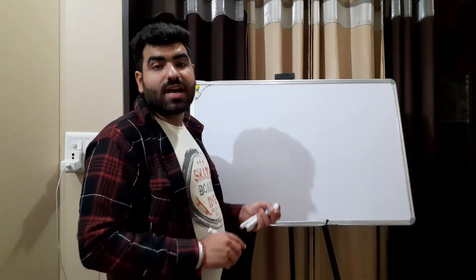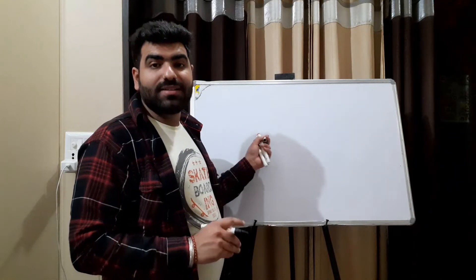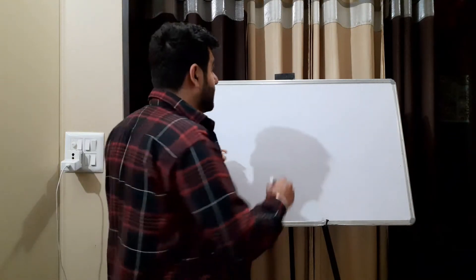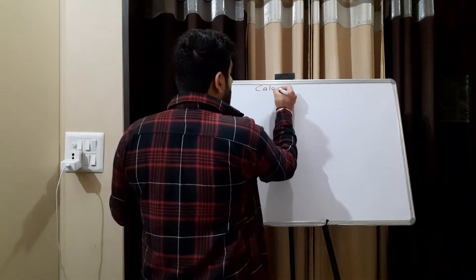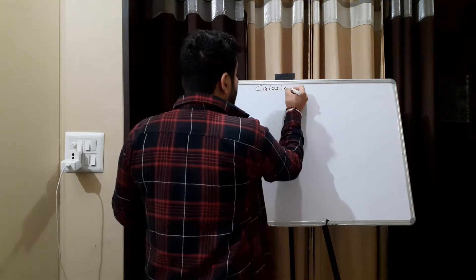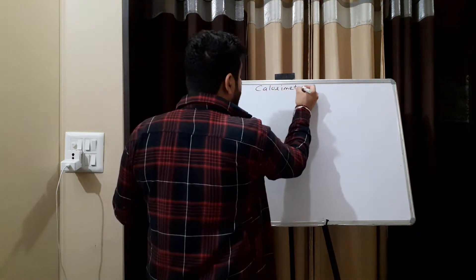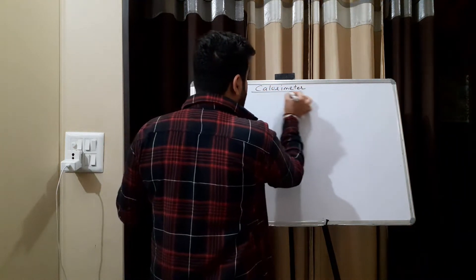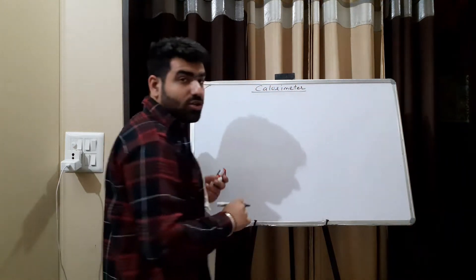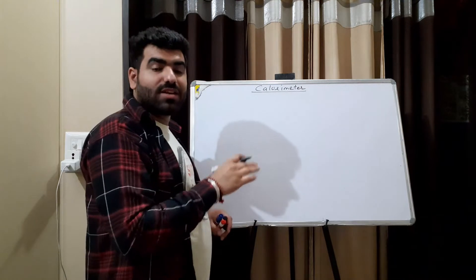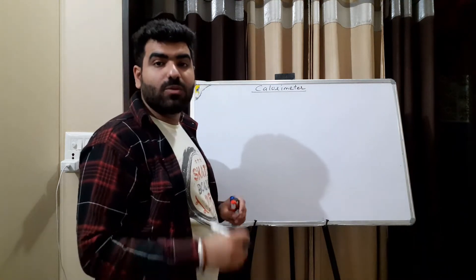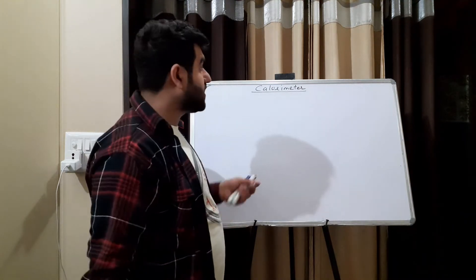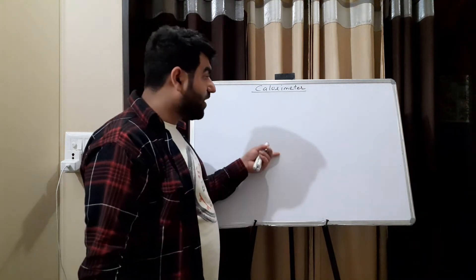Now we are going to start with the next part — the calorimeter. A calorimeter is a device which is used to measure the exchange of heat between two substances.